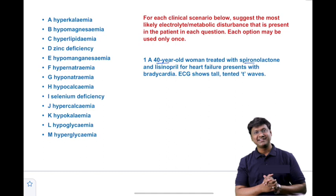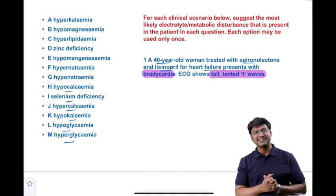The first clinical scenario is a 40-year-old woman treated with spironolactone and lisinopril for heart failure, presenting with bradycardia, and an ECG showing tall tented T waves. The individual is on spironolactone, which is a potassium-sparing diuretic, and lisinopril, which is an ACE inhibitor. The ECG showing tall tented T waves is suggestive of hyperkalemia.